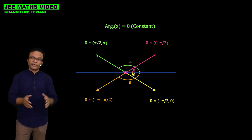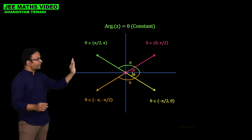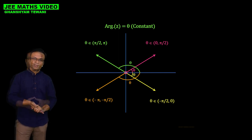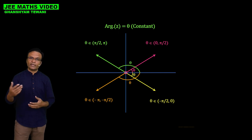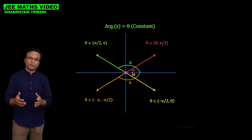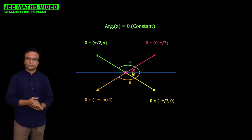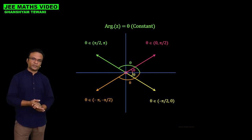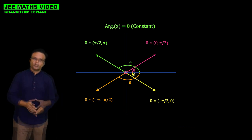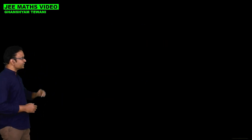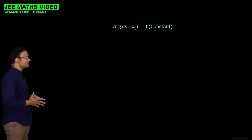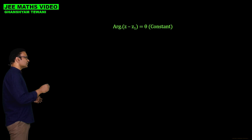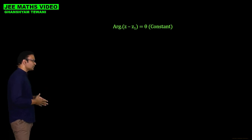So we have rays in different quadrants depending on the values of argument theta. The locus argument of z equals theta is a ray from the origin, excluding the origin, in the direction of theta. Let us now generalize: the general case is the equation argument of z minus z₁ equals theta, where theta is a constant.